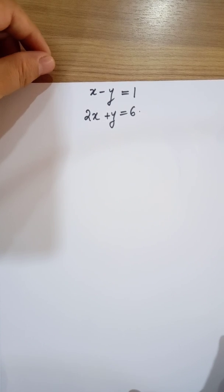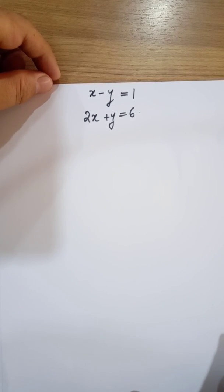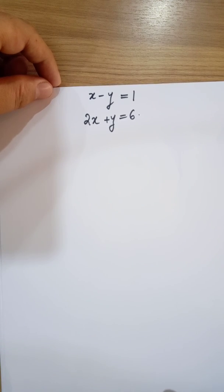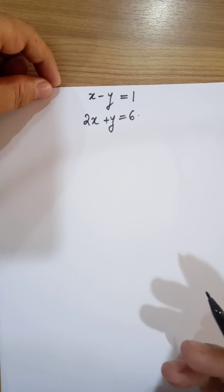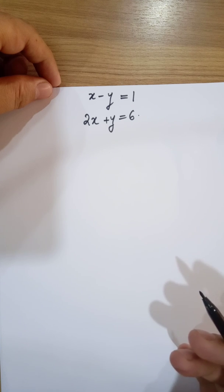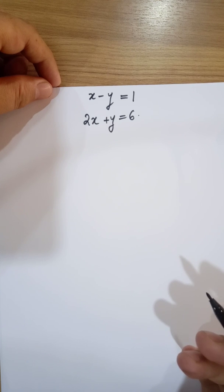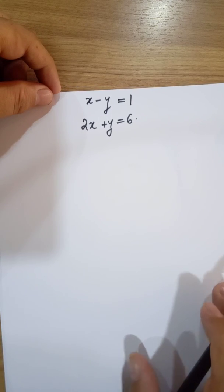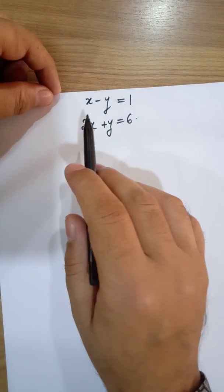In the previous lecture we learned what a system of linear equations is, how to represent a linear system in matrix form, and what consistency criteria means — whether a system is consistent or inconsistent. A consistent system may have a unique solution or many solutions, while no solution means the system is inconsistent. Now we will go through one example for each type.